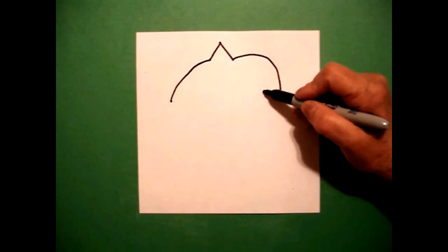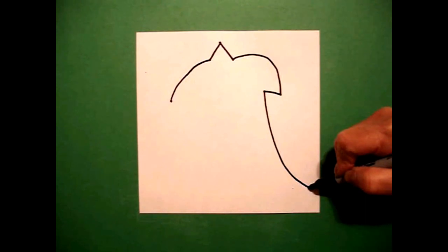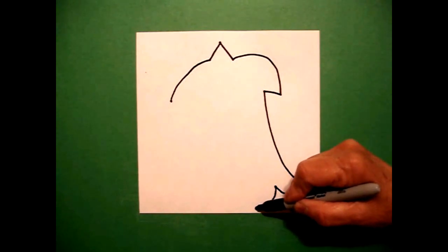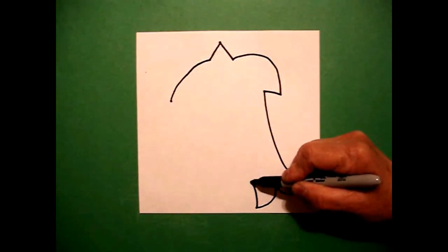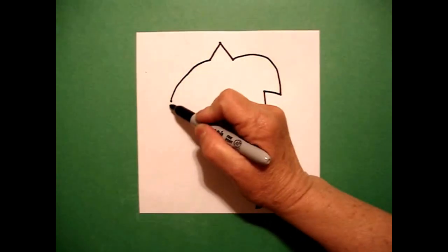From that straight line in, I draw a slightly curved line down and out, curve line in, curve line out, curve line in and stop. Come back over to the left.